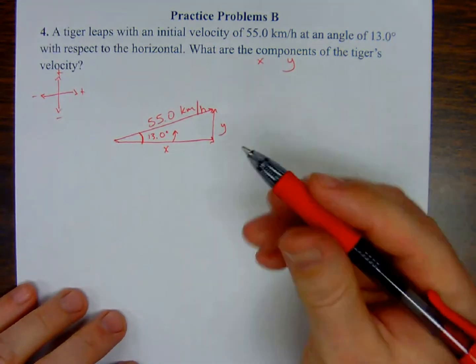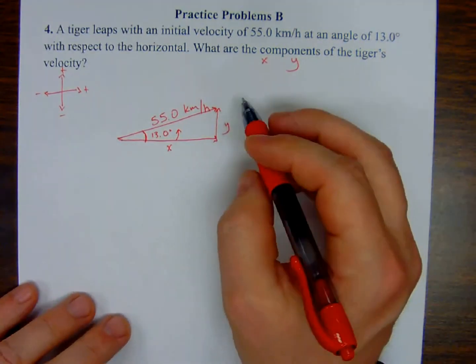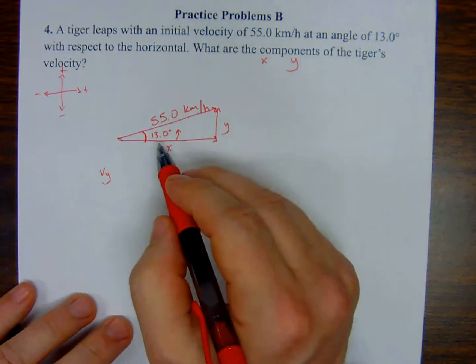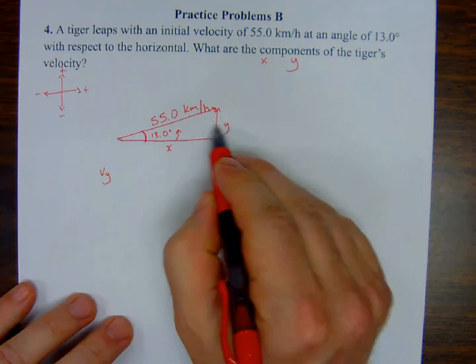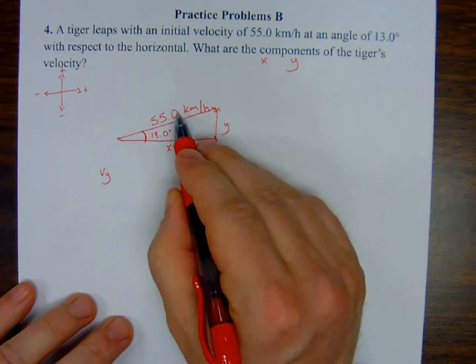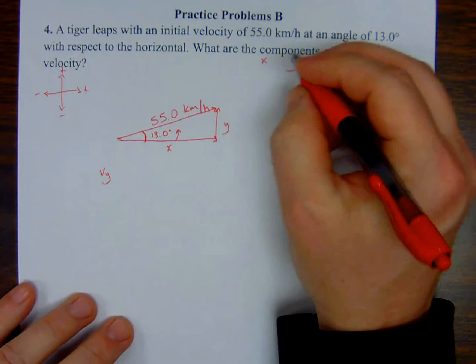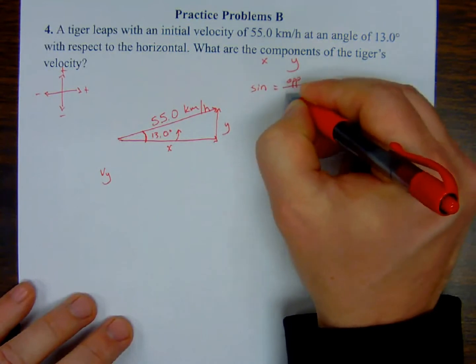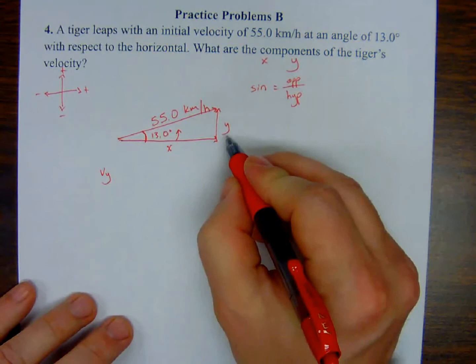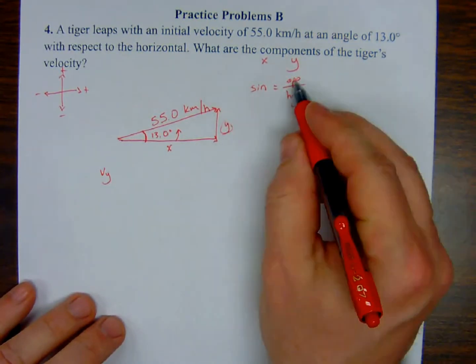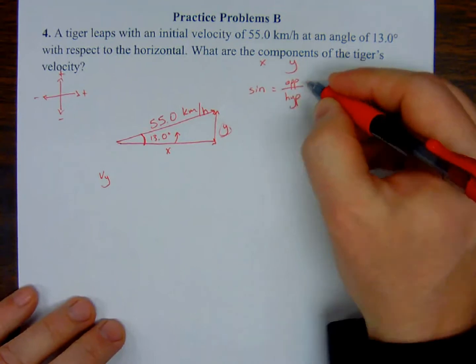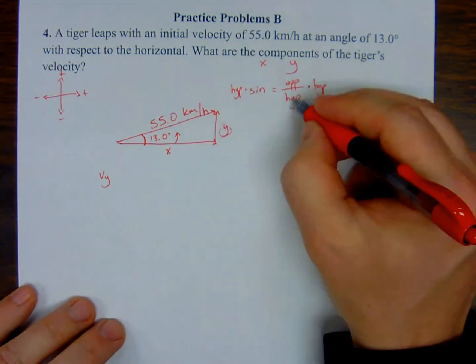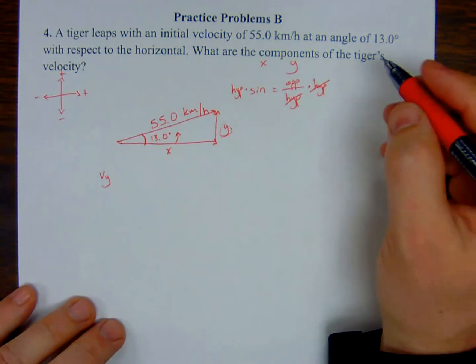When I am solving for my y component, I need to understand that sine is opposite over hypotenuse. And I can represent this: sine equals opposite over hypotenuse. In this case, I'm trying to solve for that y component, which is the opposite side. So I have to solve for the opposite side. Multiply both sides by hypotenuse so that I can cancel hypotenuse in the denominator. And I have opposite equals hypotenuse times the sine of the angle.